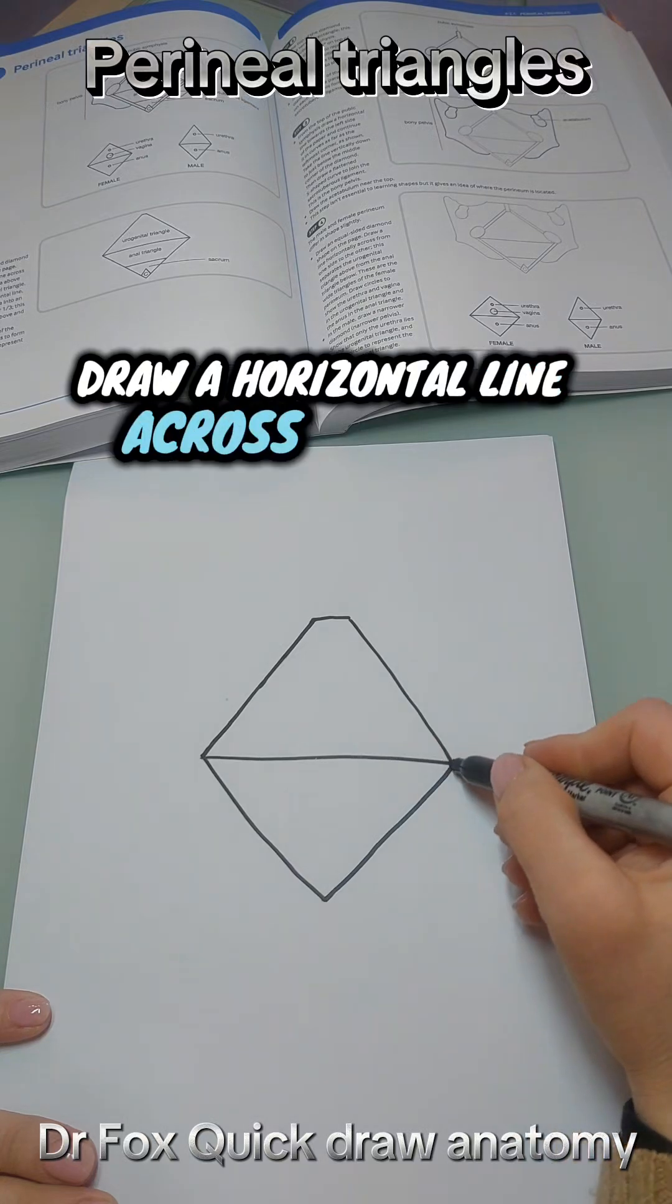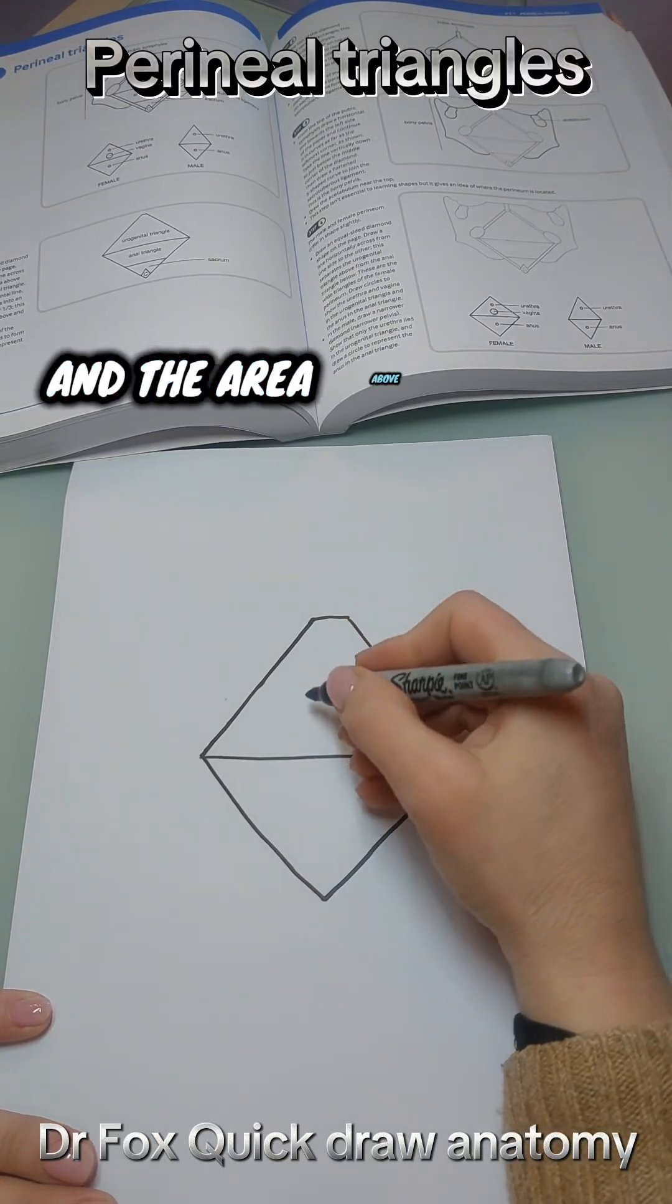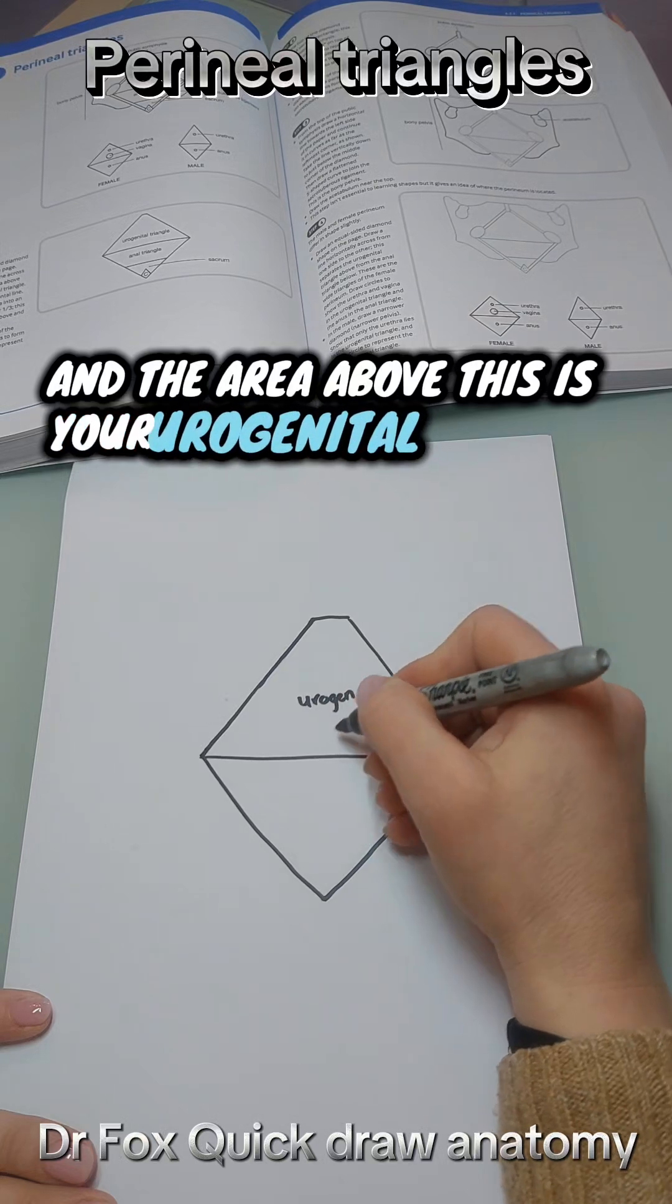Draw a horizontal line across the middle and the area above this is your urogenital triangle.